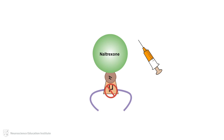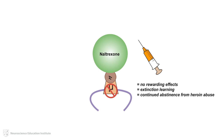When an individual is taking naltrexone, simultaneous use of heroin will have no euphoric effects. This may result in extinction of the reward pathway, whereby heroin use is no longer associated with rewarding effects. In this case, a relapse to heroin use while on naltrexone may actually help the individual to abstain from continued heroin abuse.